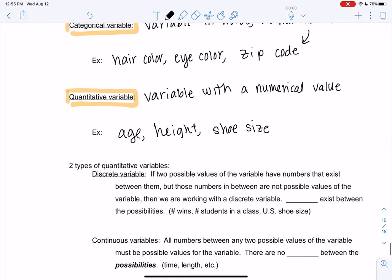And then what I'm going to do is split the quantitative variables into two types. And this is going to be important because when we do statistics in the later chapters, we're going to do different things with different types of variables. So that's why we need to know this now. So discrete is the first kind. If we have two possible values of the variable, have numbers that exist between them but they're not possible, then we call this discrete. Basically, there's gaps.